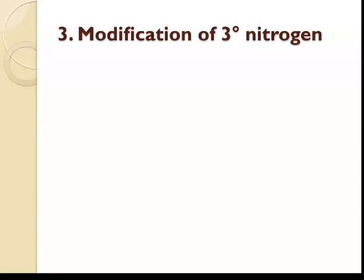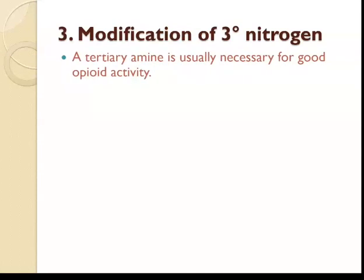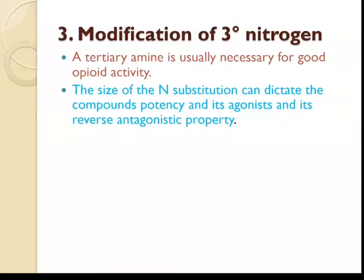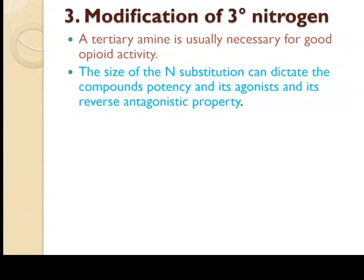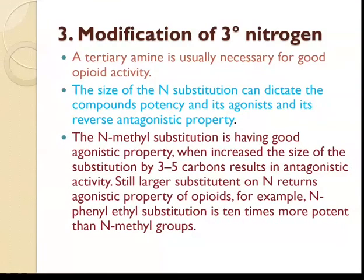Modification of the tertiary nitrogen: the tertiary amine is essential for activity and is usually necessary for good opioid activity. N-methyl substitution has good agonistic property. When the N-methyl substitution is increased by 3 to 5 carbons, it results in antagonistic activity.